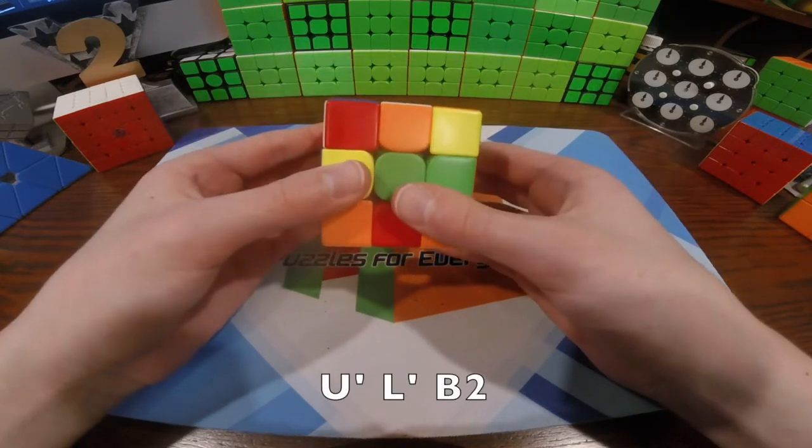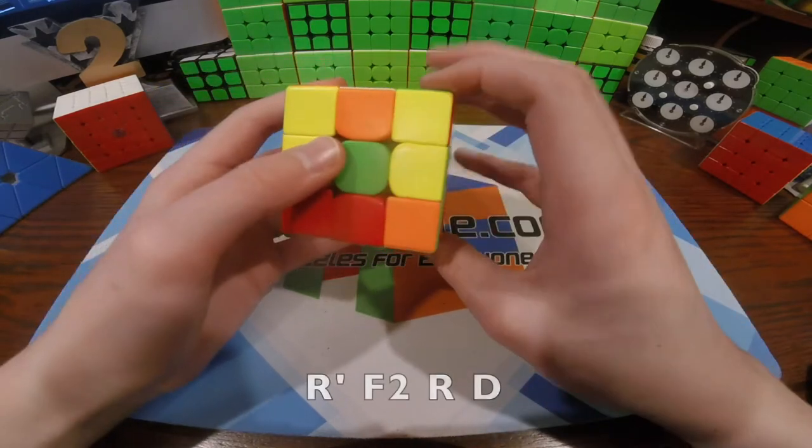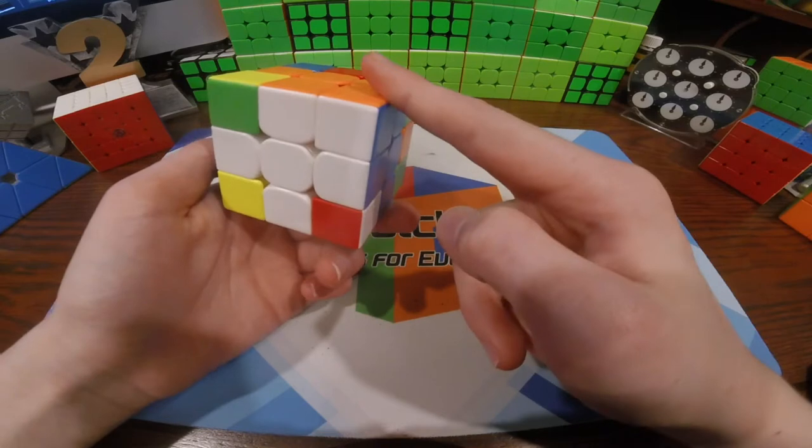So I did a U'L'B2 to get a few cross edges and this in, and an R'F2RD to get that in.